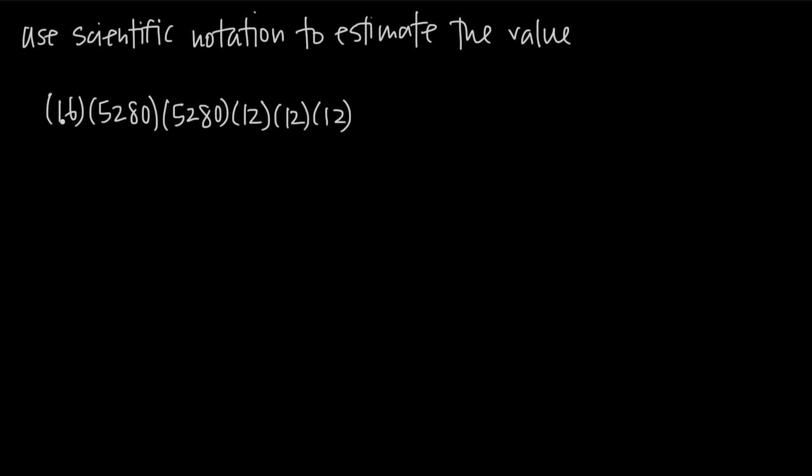So we want to take each of these values separately. First, we have 16 here, and our decimal point is right here. If we move it over one spot, we have 1.6. This whole number is going to be 1.6 times 10 to the first because we moved the decimal place 1 to the left, which means our exponent is positive and equal to 1.